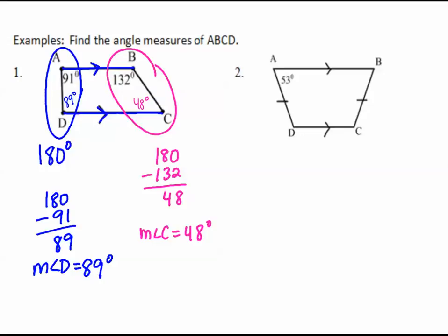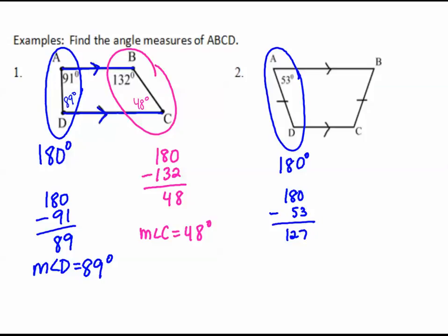For number two, notice it's an isosceles trapezoid — these legs are congruent. I still have two consecutive angles that are supplementary: 180 minus 53 equals 127 degrees. So the measure of angle D is 127 degrees. Because the legs are congruent, the base angles are congruent too. So angle B equals 53 degrees and angle C equals 127 degrees.